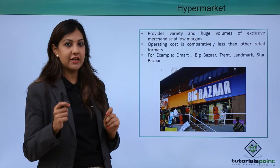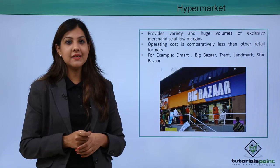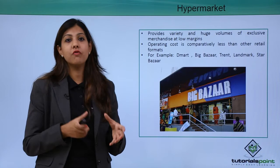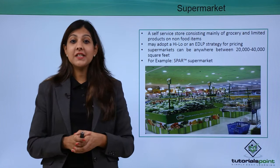A hypermarket provides a huge variety of exclusive merchandise at very low margins. Examples include Big Bazaar and Food Bazaar, where you find food products, vegetables, and groceries at very compelling prices. Their operating cost is comparatively less than other retail formats. Other examples include D-Mart, Big Bazaar, Trent, Landmark, and Star Bazaar.